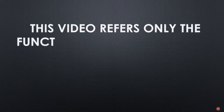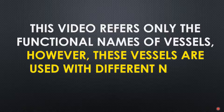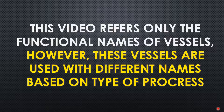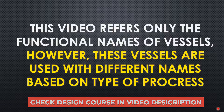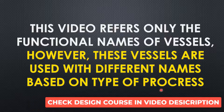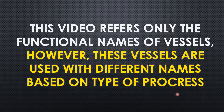This video refers only to the functional names of vessels. We have to remember that common types of vessels are named differently in different process plants based on the type of process. In this video we are talking purely about functional types, not process-specific types, because the names of vessels change with respect to the type of process.